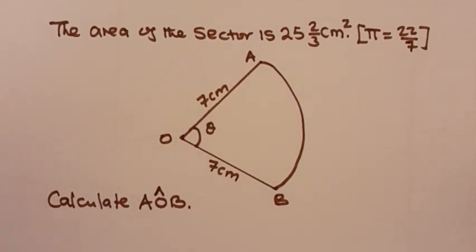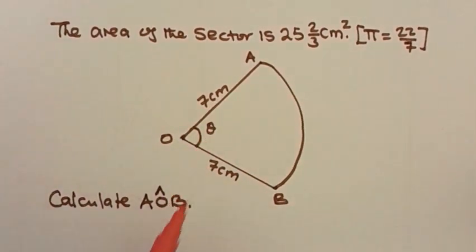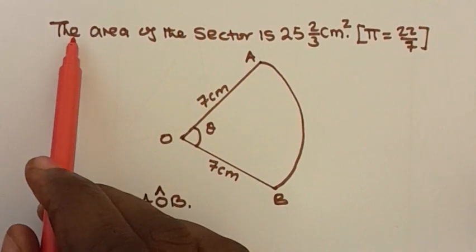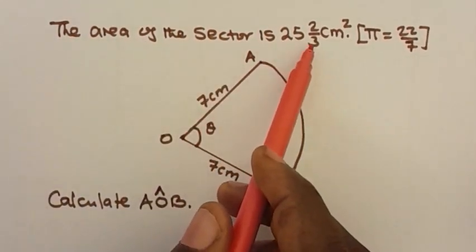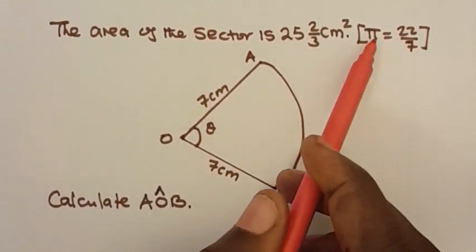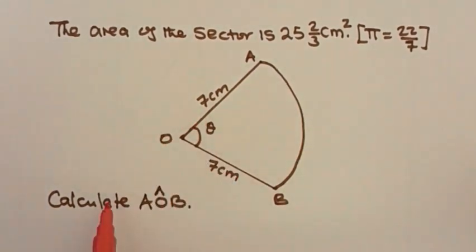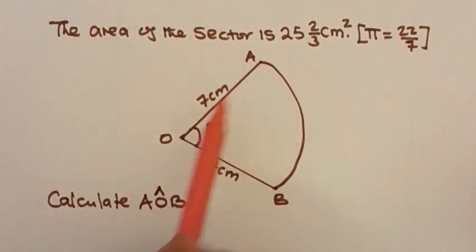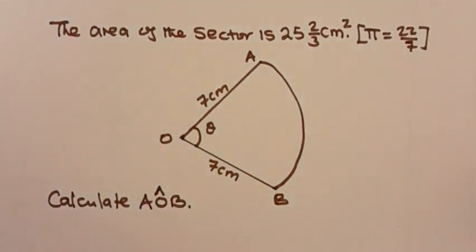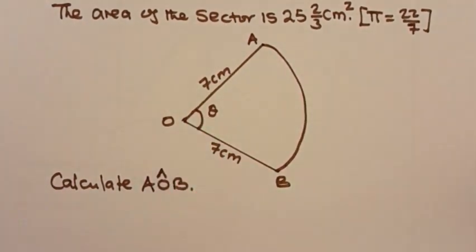In the last video we looked at how to find the area of a sector of a circle. In this video we're going to look at how to find the central angle of a sector. The question gives us the area of a sector as 25 and two-thirds square centimeters, with pi equal to 22 over 7, and asks us to calculate angle AOB — the central angle theta.